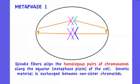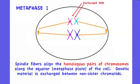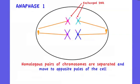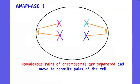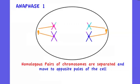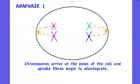In metaphase 1, homologous pairs line up along the equator of the cell. This is followed by anaphase 1, where the homologous pairs are separated. Each chromosome is pulled toward opposite poles of the cell, and the spindle begins to disintegrate.